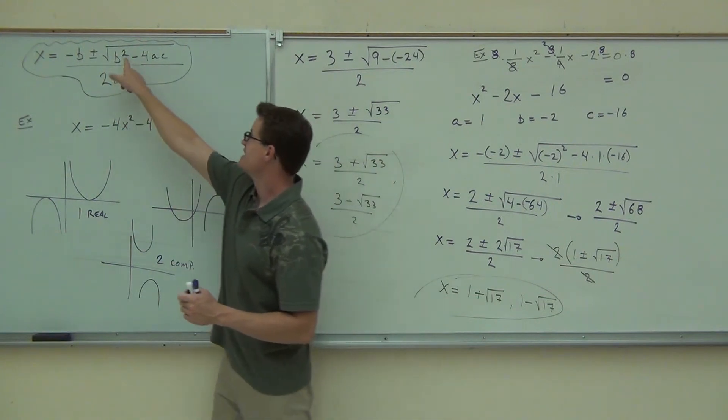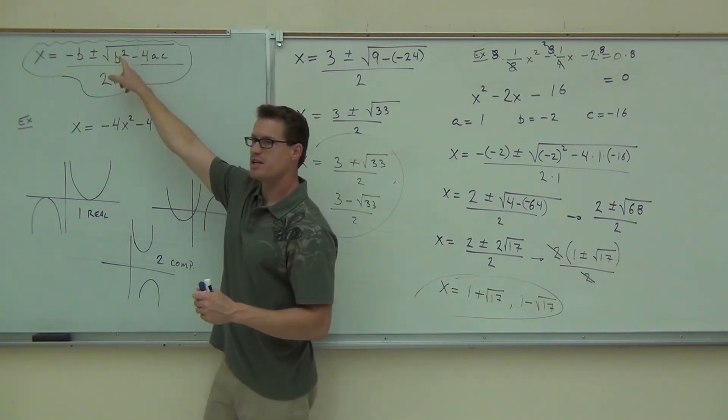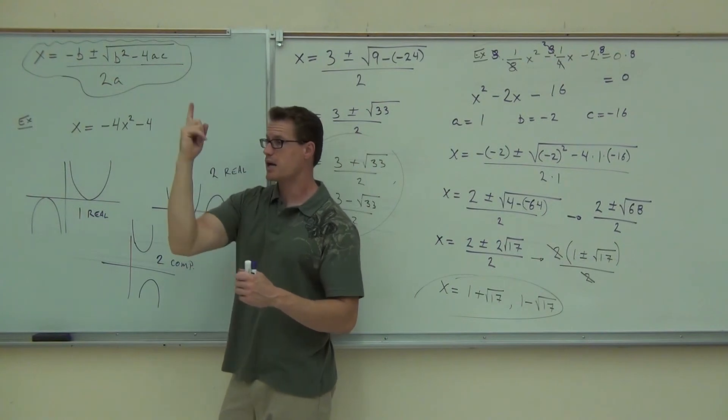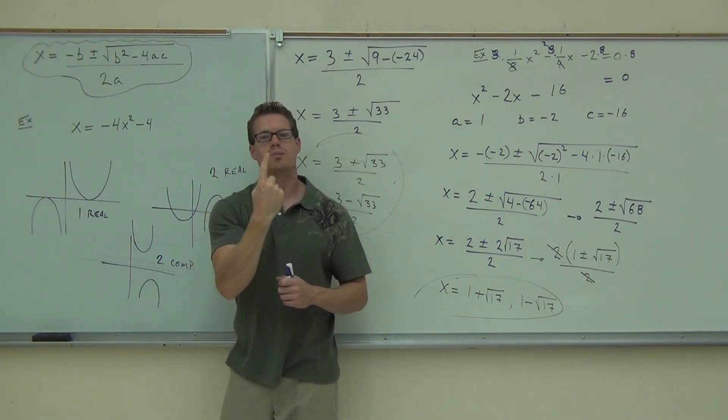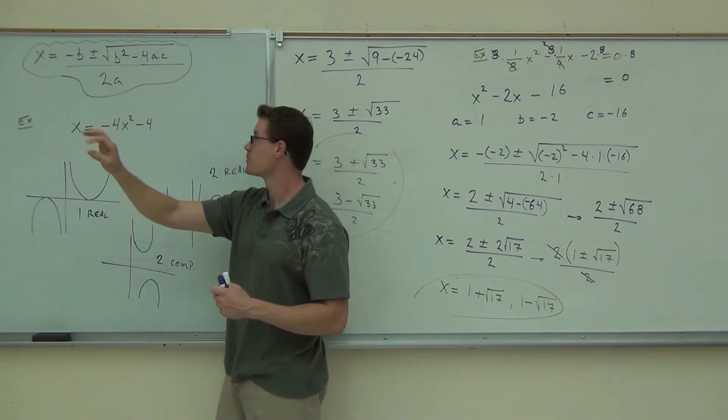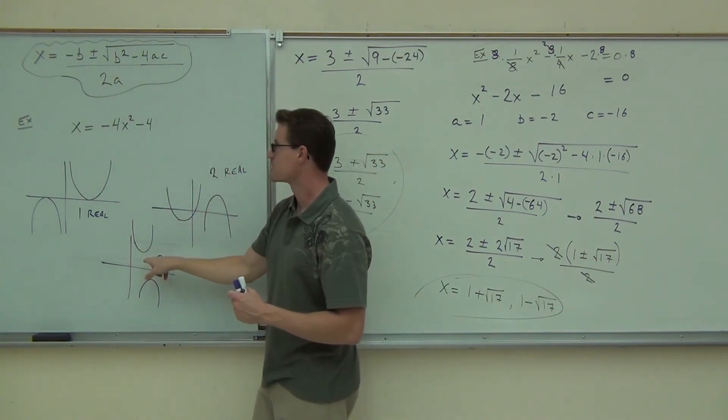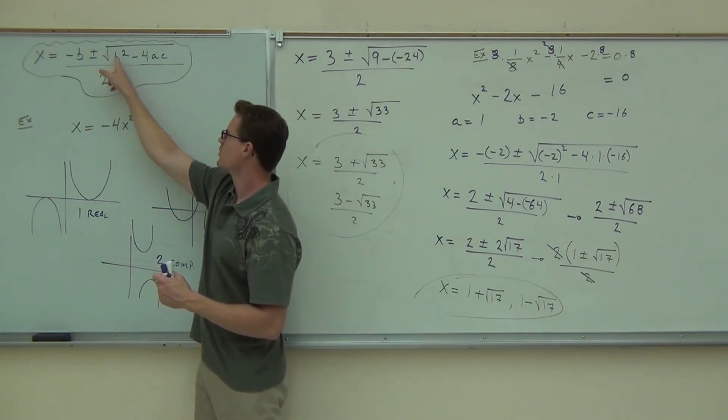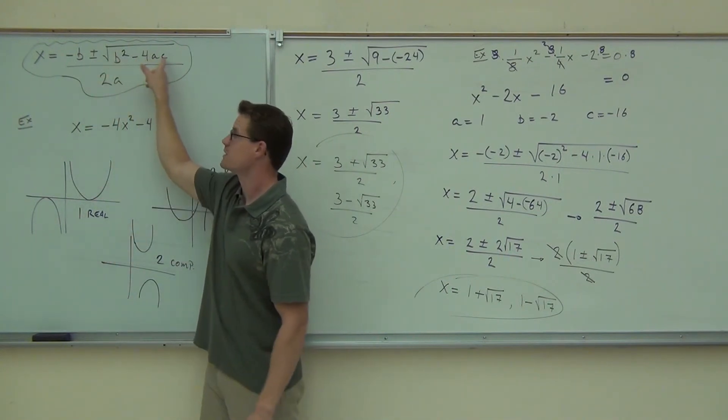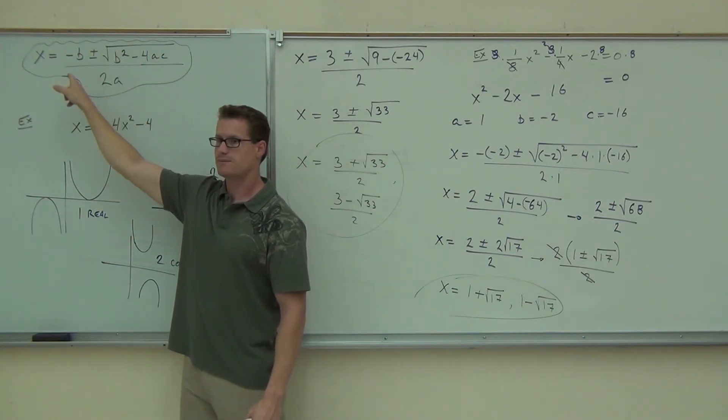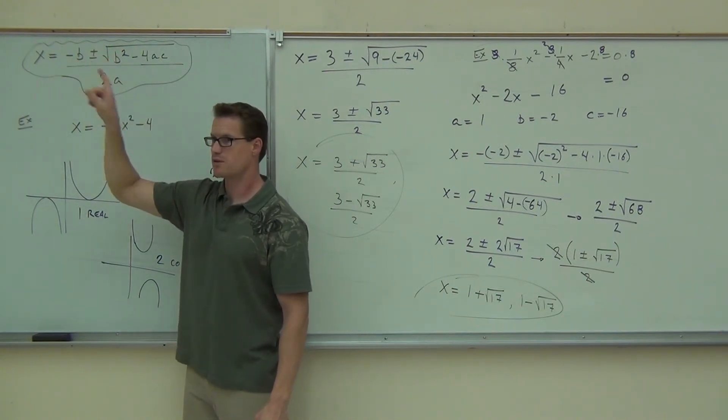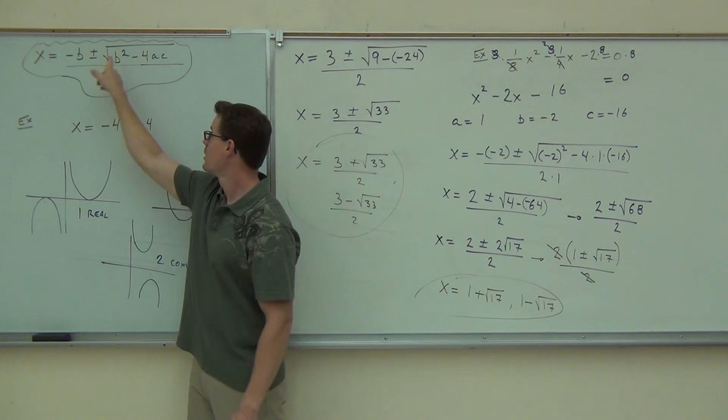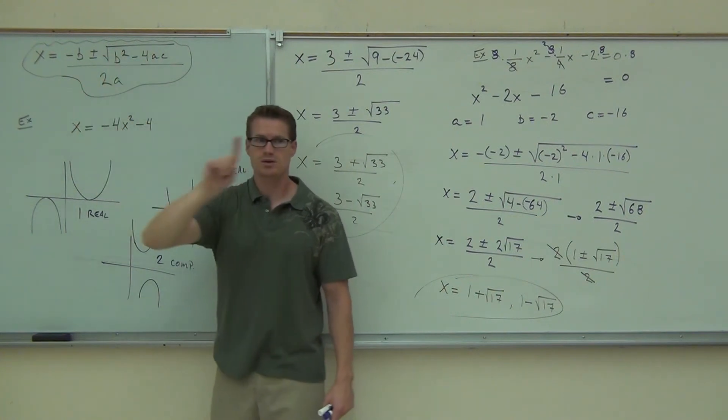If this is negative, what's the square root of a negative number? What's it going to give you? I. Square root of a negative is I. That's going to give you two complex solutions. You're going to be adding and subtracting a complex. That would be this case. What's the only time you can get one solution? How much would this have to be?